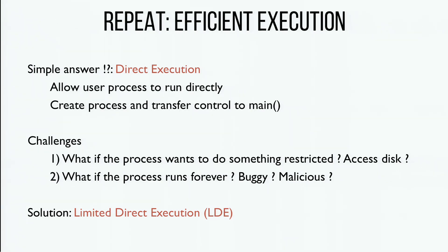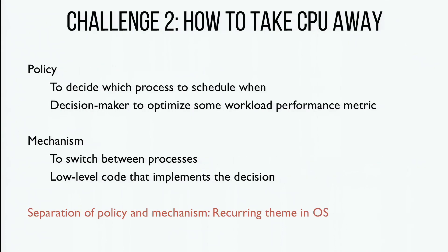We've solved how a user process can make system calls to execute privileged instructions inside the OS. The next challenge is how do we take away the CPU from a process that doesn't want to call exit, is malicious, or is just buggy. There's policy — deciding when to take the CPU away — which we'll cover in upcoming lectures. Today it's just the mechanism: how do you physically take that CPU from a process that still wants to use it. Separating policy from mechanism is an important theme — it keeps things cleaner.